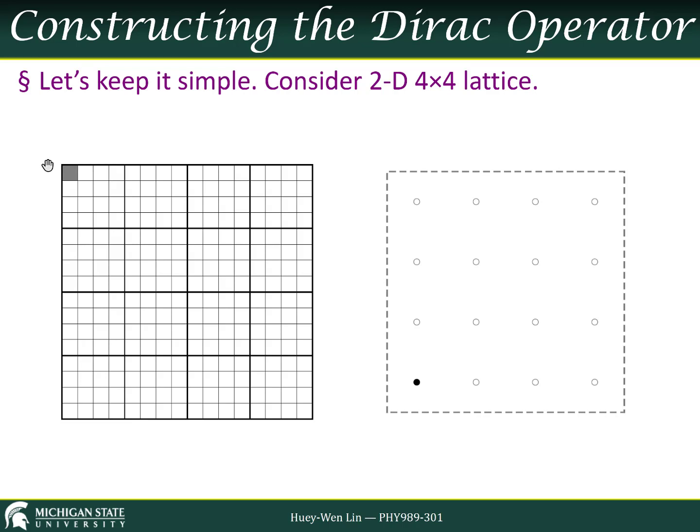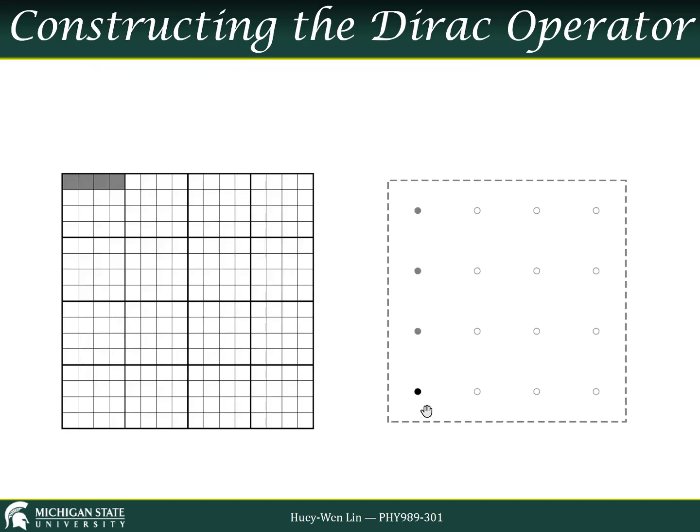The matrix represents the interaction of each of the points on the lattice with all the other points on the lattice. So for the first point, its interaction with itself is represented by the quantities in this first box marked in gray here. If we consider the interactions of this point with all the other points in one dimension, those will be represented by these points here within this smaller box that we've marked out within the larger matrix.